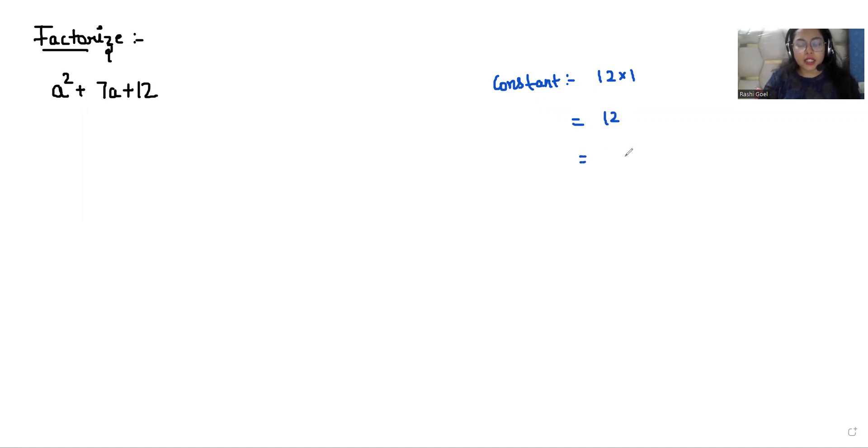So 12, I can write it as 3 × 4 = 12, and if I add this, I get 3 + 4 = 7. That is our middle term. So I can write the equation as a² + 3a + 4a + 12.